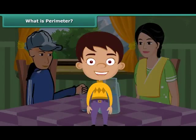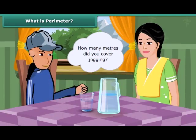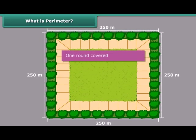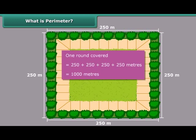Let us now try to answer your mother's question — how many meters did you cover jogging? In every round of jogging, you covered the four sides of the park. Since the park is a square, all its sides are equal. Thus, in one round, you covered 250 plus 250 plus 250 plus 250 meters — that is 1,000 meters.